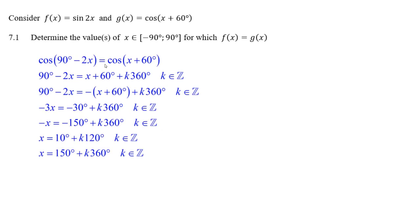The cosine of 90 minus 2x equals the cosine of x plus 60. And the only way these two things can be equal is if 90 minus 2x equals x plus 60 degrees. And that solution would repeat itself every 360 degrees.